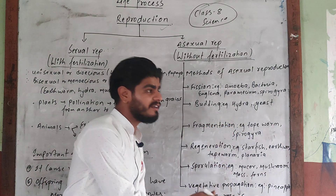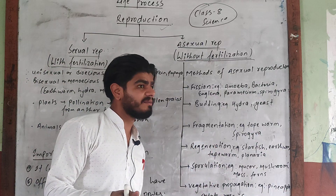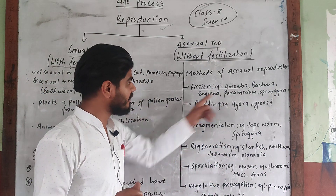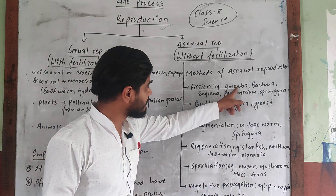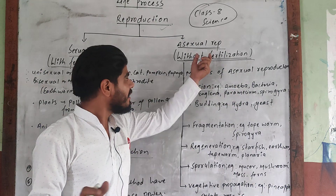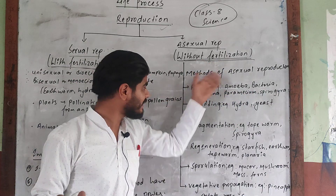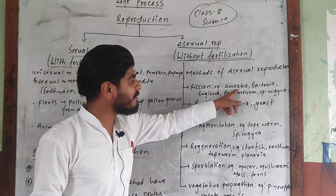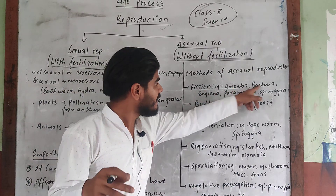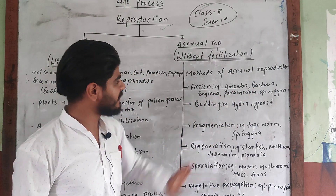Under favorable conditions, it is binary fission. Under unfavorable conditions, it is multiple fission. Examples of fission include bacteria, euglena, paramecium, and also Plasmodium.